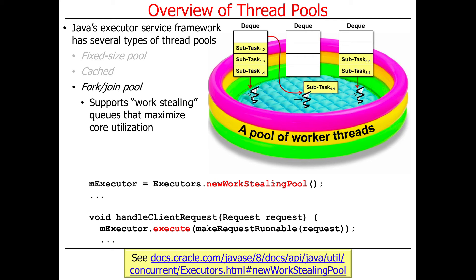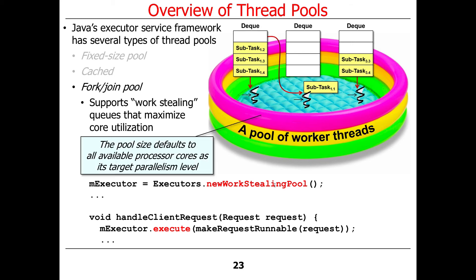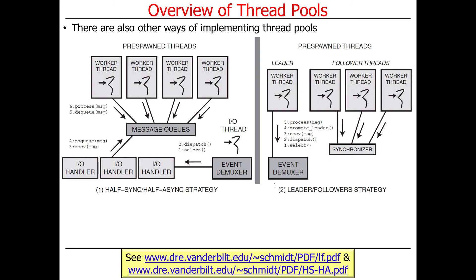We'll talk more about work stealing later. Those are work stealing queues that are used to maximize processor core utilization. We have this thing called a work stealing pool, and the size of this pool defaults to all the available processor cores as its target parallelism level. We'll talk more about what that means as well. There are also other ways to implement thread pools — various papers and books talk about some other ways — but don't worry too much about them right now. It's just alternative ways of being able to make things run concurrently.